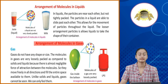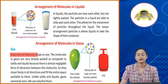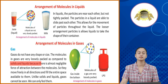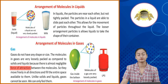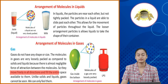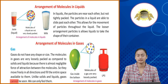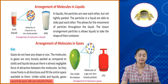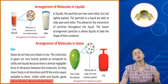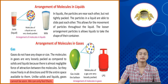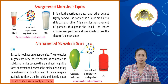Arrangement of molecules in gases. Gases do not have any shape or size. The molecules in gases are very loosely packed as compared to solids and liquids because there is almost negligible force of attraction between the molecules. So they move freely in all directions and fill the entire space available to them. Unlike solids and liquids, gases cannot be seen — we can only feel them. Jo gas hote hai, woh liquid aur solid se bhi zhaadha loosely packed molecules carry karte hai, isi ki wajah se in ka koi bhi definite shape nahi hota.